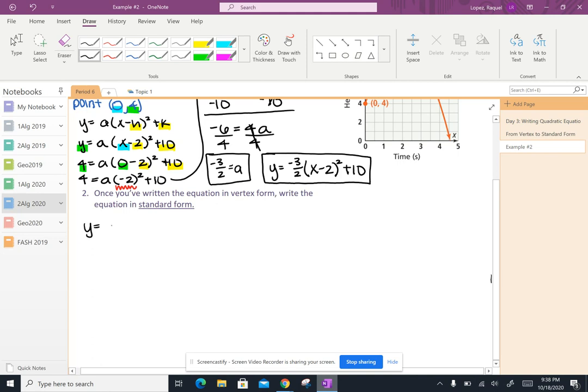So I'm starting off with y equals negative 3 halves, x minus 2 squared plus 10. Now remember to start simplifying this, we are going to expand that x minus 2. So remember this squared here is saying